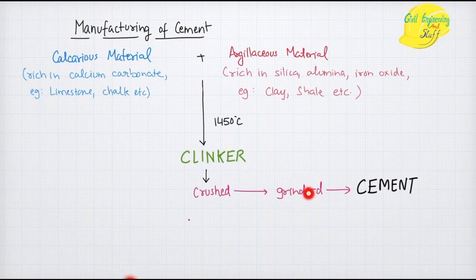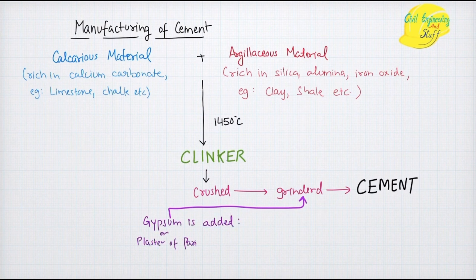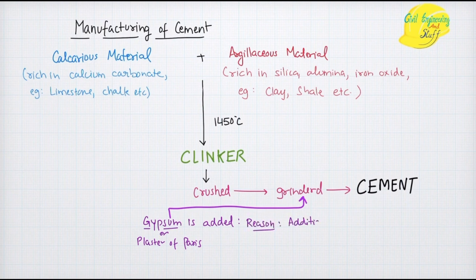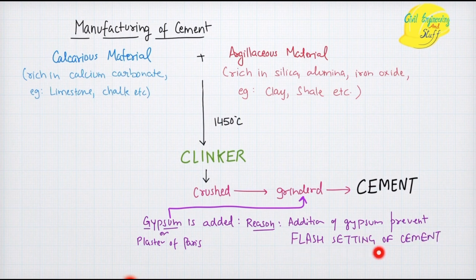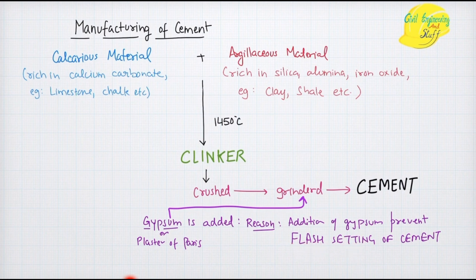This clinker is then crushed and ground to give a very fine material, and that fine material is cement. During the grinding process, gypsum — or plaster of Paris — is added. The reason for the addition of gypsum is that it prevents the flash setting of cement.